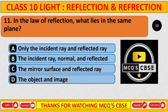In the law of reflection, what lies in the same plane? The correct answer is B: the incident ray, normal ray, and reflected ray lie in the same plane.